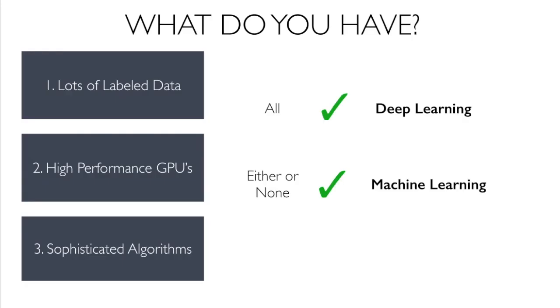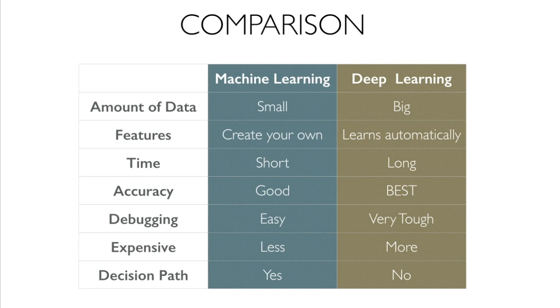How do you pick machine learning versus deep learning? The three key requirements are lots of labeled data, high-performance GPUs, and sophisticated algorithms. If you have access to all three, deep learning is a great option. But if you're missing one or more of these, machine learning is probably the better option. Labeled data is extremely expensive, and if you don't have access to it, your deep learning algorithms won't be very effective.